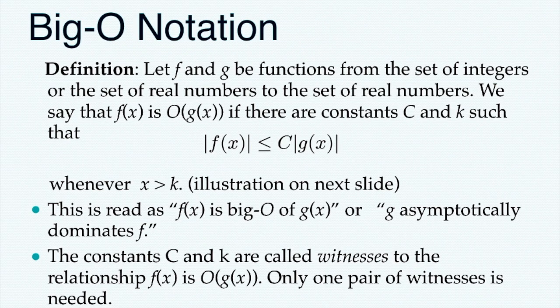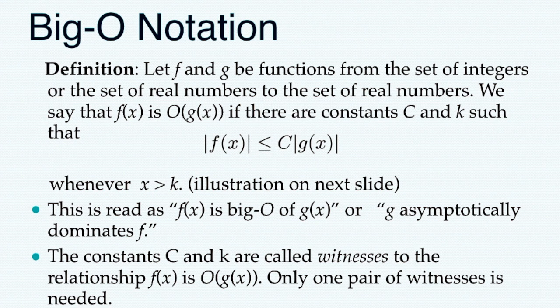This brings us to Big O notation. Given two functions f and g from the set of integers or real numbers to the real numbers, we say in discrete mathematics that f(x) is O(g(x)) if there exist constants c and k such that f(x) is less than or equal to c·g(x) whenever x is greater than k. You can think of Big O as the ceiling — the upper limit or worst-case estimate for the behavior of f(x), described by g(x).